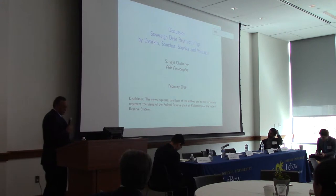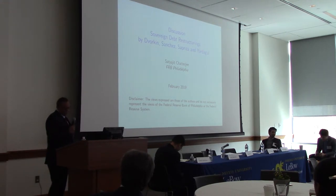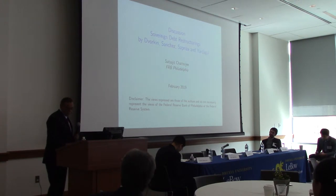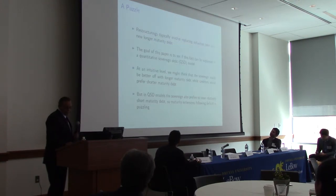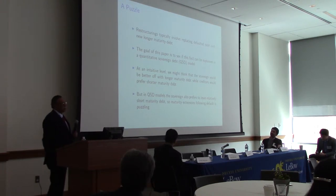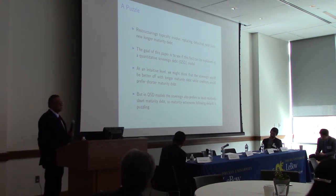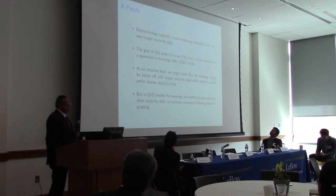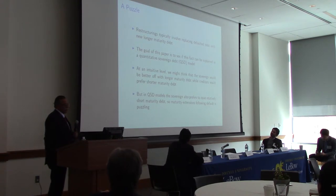Thanks to Timon for asking me to discuss this paper. It's been a very informative conference. I'm going to talk about what Juan just presented, and I want to emphasize what he said at the very end: in the models we use to think about sovereign borrowing, sovereign default, and restructuring, there is actually a big puzzle in terms of maturity choice.